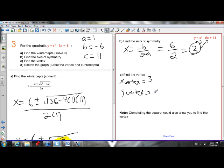So 3 squared minus 6 times 3 plus 11, 9 minus 18. Negative 9 plus 11 is 2. So my vertex is 3, 2.